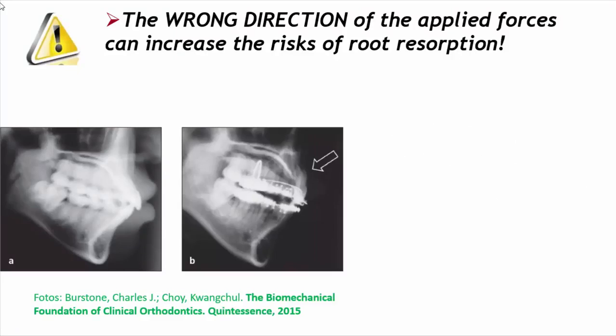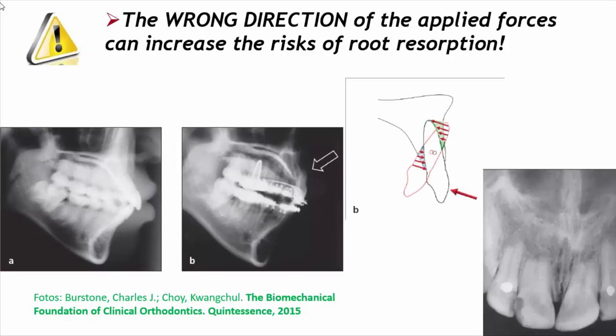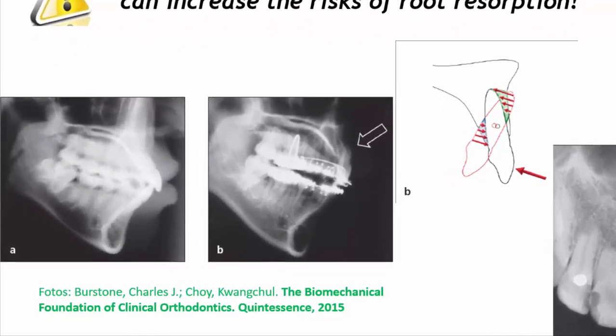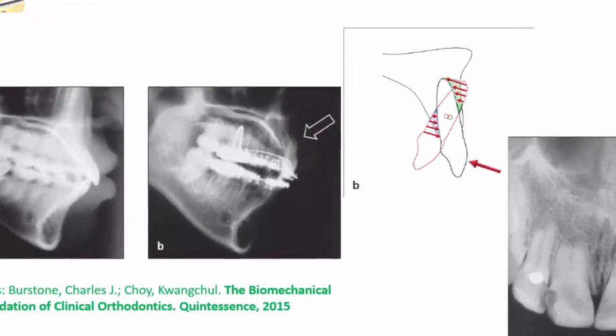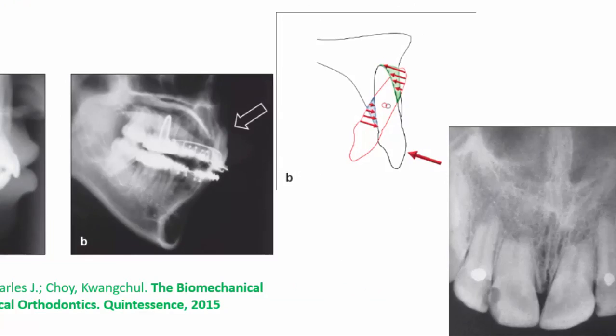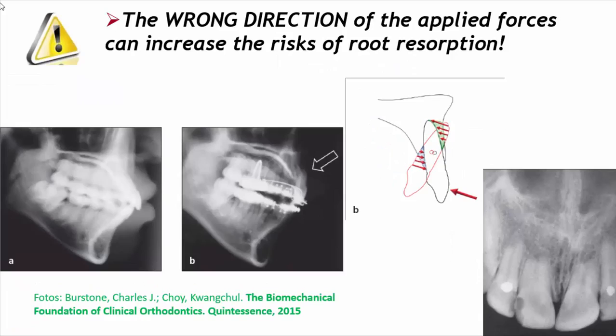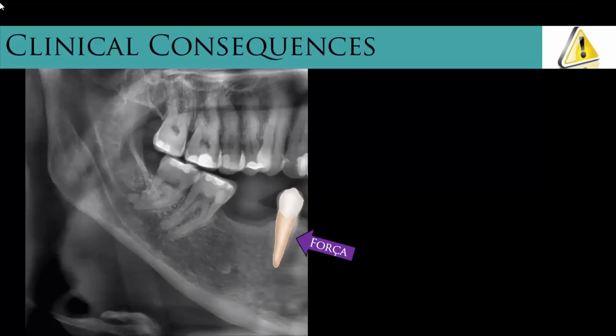One of the most feared clinical consequences in orthodontics is root resorption, which is usually associated with intense and or poorly directed force. Perceive this example illustrated in the book of professors Burstone and Choy, in which an exaggerated inclination of the upper incisors to the lingual generated significant areas of compression in the ligament against the alveolar bone, favoring the root resorption of the teeth. It is quite possible that in this case the problem hasn't been the intensity of the applied force, but the wrong direction.